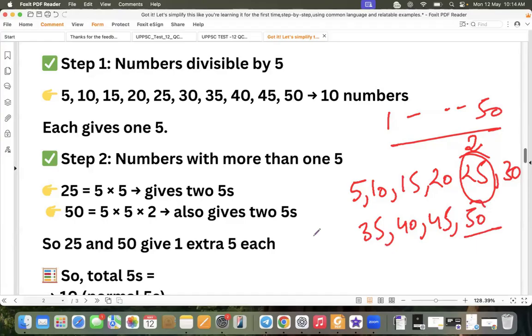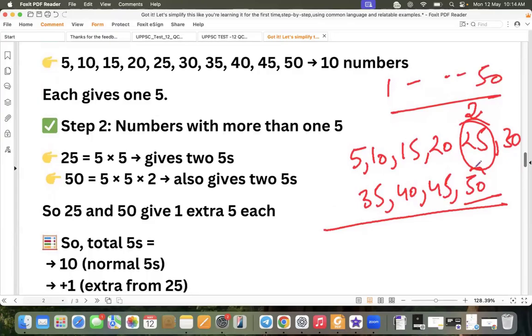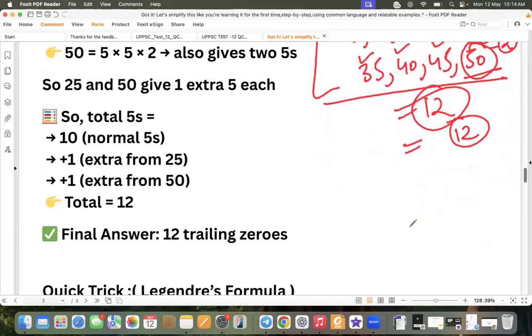Understood or not? Here again there will be 2 zeros. So this way you can calculate. 1, 2, 3, 4, 6, 7, 8, 9, 10, 12. So total number of 5s are 12. So trailing 0 is 12. So this is a long cut.